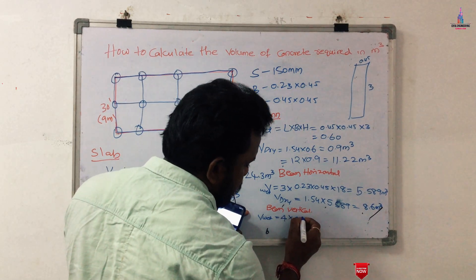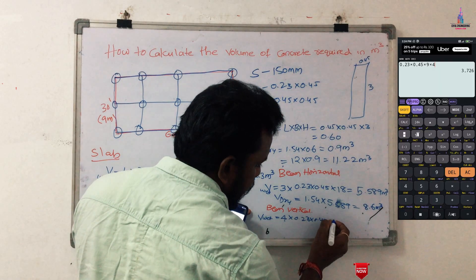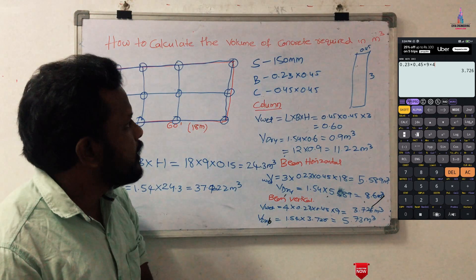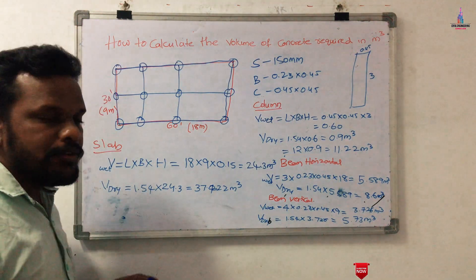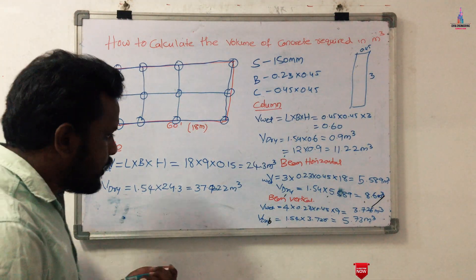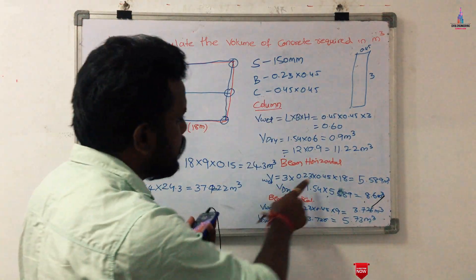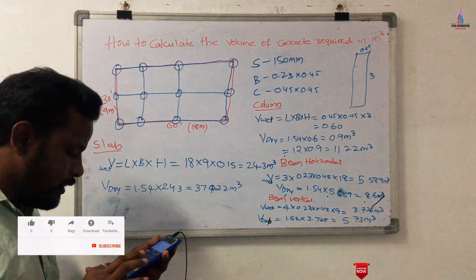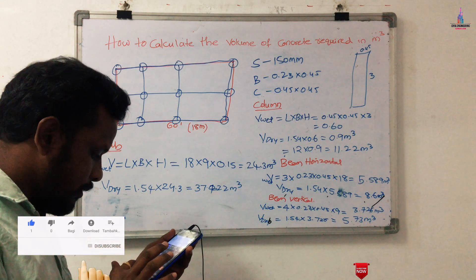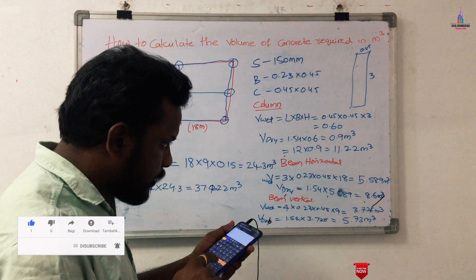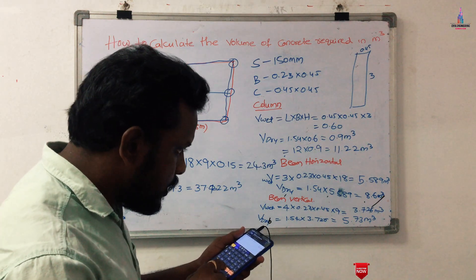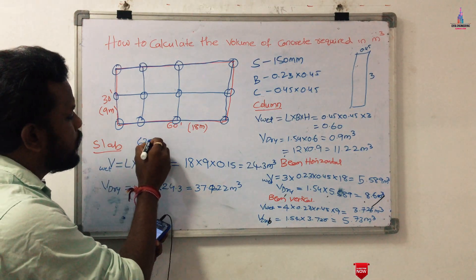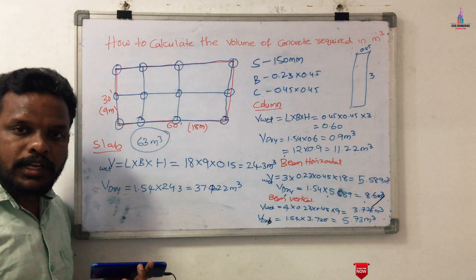For vertical beams: 4 beams, dimensions 0.23 × 0.43 m, length 9 m. Calculating the wet volume accordingly gives approximately 5.73 cubic meters. Now summing all dry volumes: slab 37.422 + columns 11.22 + horizontal beams 8.6 + vertical beams 5.73, giving a total of approximately 63 cubic meters for one floor slab level.